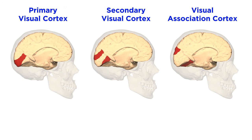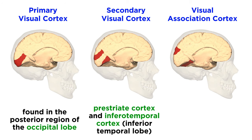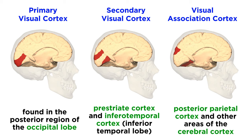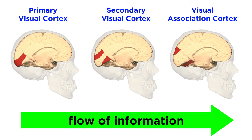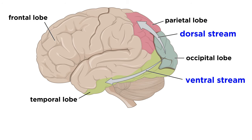To help distinguish the locations of these regions within the brain, the primary visual cortex sits in the posterior region of the occipital lobes. The secondary visual cortex can be found in the prestriate cortex, which surrounds the primary visual cortex, as well as the inferotemporal cortex, found in the inferior temporal lobe. The visual association cortex is found largely in the posterior parietal cortex and also distributed around other areas of the cerebral cortex. The hierarchy is such that visual information goes from the primary cortex to the secondary, then to the association cortex. These other areas are responsible for visual analysis via the dorsal stream and the ventral stream.